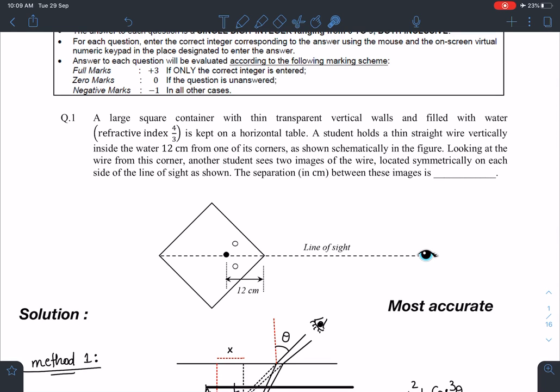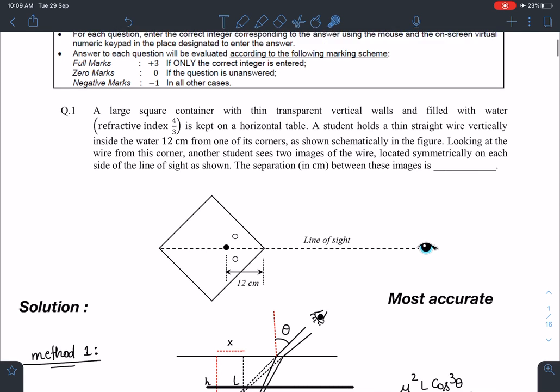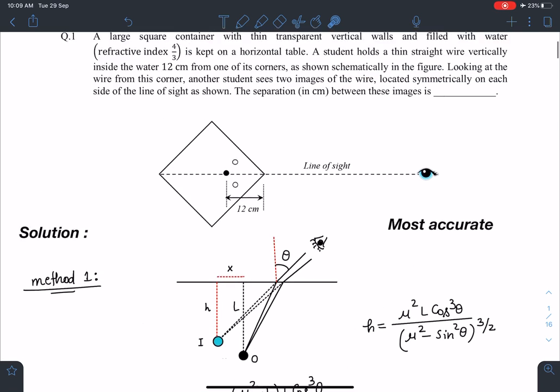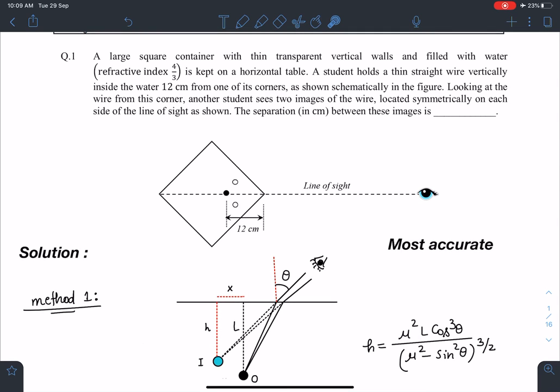So first one, let's talk about the most accurate method. So the idea here is actually such type of problems are asked for near normal cases, but in this case, such type of light rays will never reach to this observer who is present on this line of sight. So that creates a trouble here.